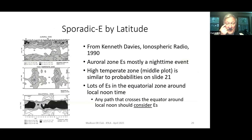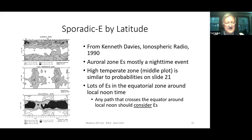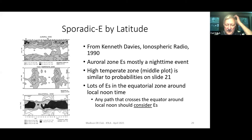Here are images of sporadic E by latitude from Ionospheric Radio by Kenneth Davies, 1990. At the top is the auroral zone - ES is mostly a nighttime event there. The middle plot is the high temperate zone or mid-latitudes, similar to that dual mode probability picture. There's lots of ES in the equatorial zone around local noon. So if you're trying to figure out a path anything that crosses the equator around local noon, you ought to consider sporadic E - it might be playing a role there. It's got pretty high probabilities of occurring throughout the year around local noon.